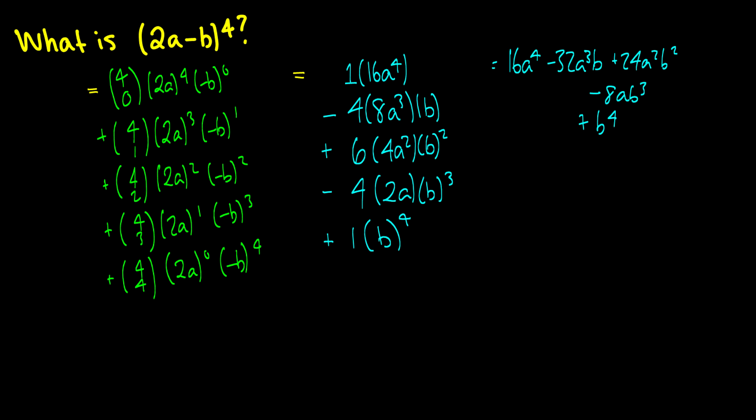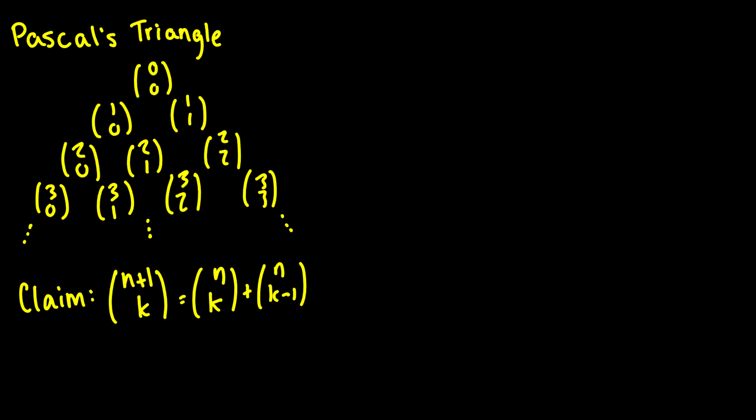There's something very cool that relates to this 4 choose 0 through 4 choose 4 thing, and that is called Pascal's triangle. If we label the triangle and start with 0 choose 0, then the next line we write 1 choose 0 through 1 choose 1, and we just keep increasing n as we go down and go through all the k values from 0 to n.